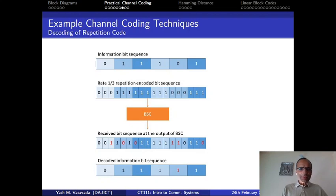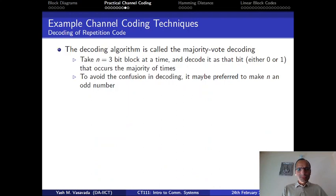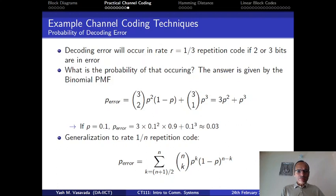You have worked on this in lab number 3, and so we won't spend too much time on it. In lab 3 you also evaluated the probability of decoding error for this rate one-third repetition code and it takes a particular formulation that is mentioned over here. So what this shows is that if the binary symmetric channel has a flip over probability of 10 percent, after the repetition code it reduces to around 3 percent, which is quite a significant reduction in the probability of error.